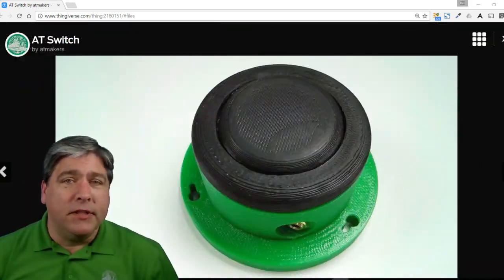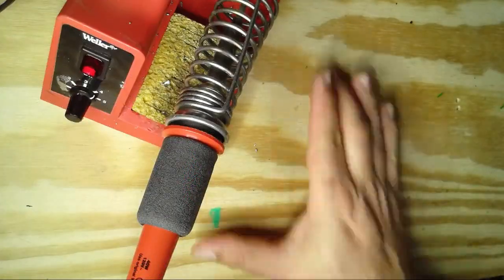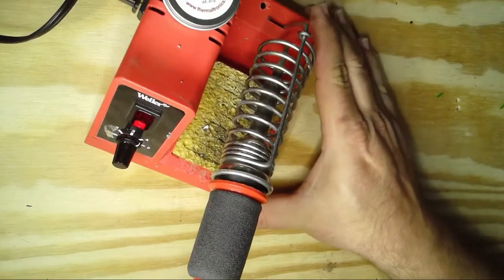Once you've got your printed parts, it's time to assemble it. Let's get started. All right, let's start with the tools we're going to need. We are going to need a soldering iron.